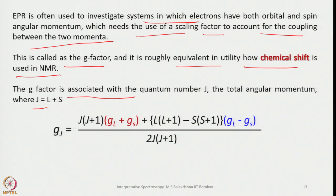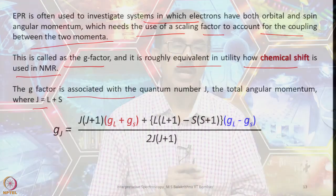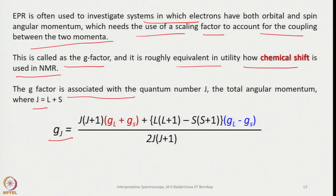In UV-visible spectroscopy, spin-orbit coupling gives J = L − S when the subshell is less than half-filled, and J = L + S when more than half-filled. For example, for D⁴ we use J = L − S, and for D⁶ we use J = L + S. This same term without the G factors is also used for calculating μ_effective for paramagnetic species.